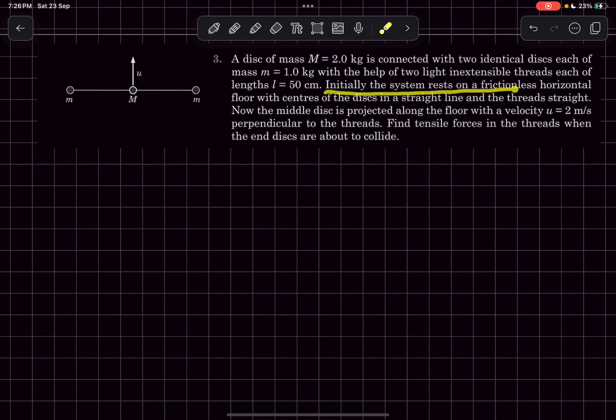Initially the system rests on a frictionless horizontal floor and the centers of the disks lie in a straight line. Now the middle disk is projected along the floor with a velocity of 2 meters per second perpendicular to the threads.